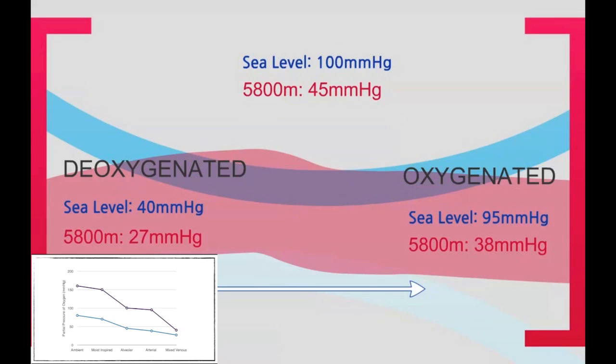The change from arterial and venous partial pressure is dependent on a couple of factors, such as the metabolic rate, the cardiac output, and the oxygen carrying capacity of blood, i.e. the hemoglobin concentration.